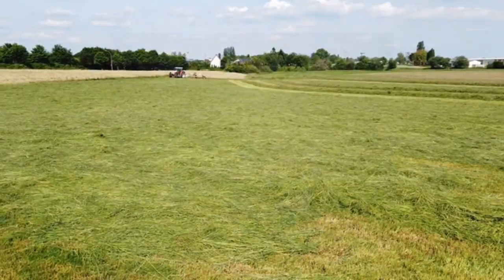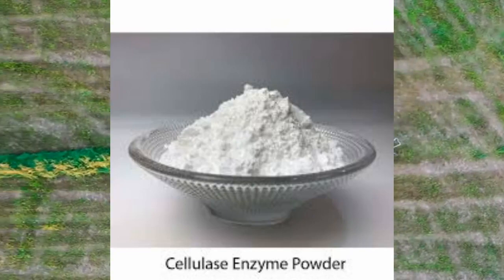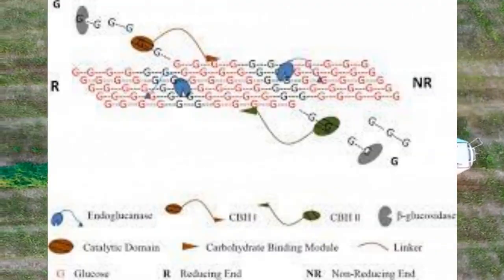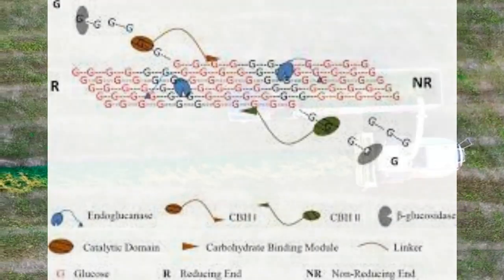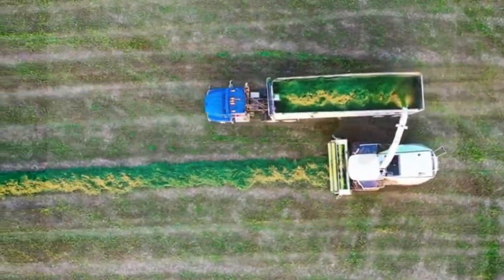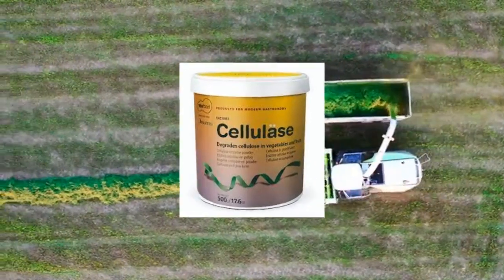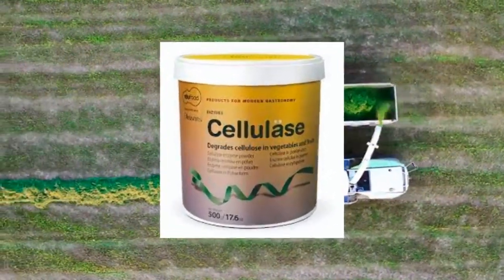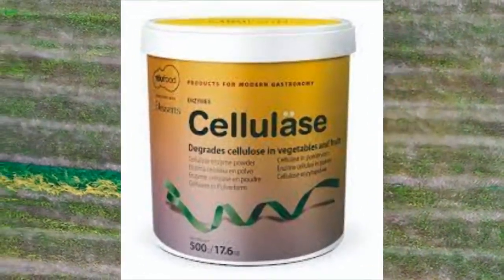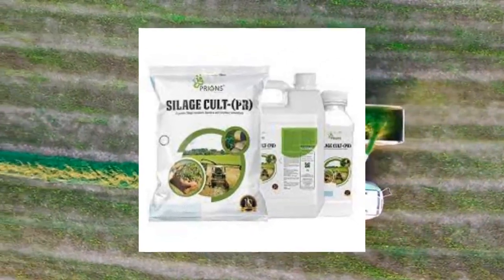Let's look at the enzymes. We have cellulase and hemicellulase. These enzymes, when added to silage, break down plant cell walls, releasing sugars that bacteria can ferment into lactic acid, thus improving the efficiency of the fermentation process. We also have amylase, which breaks down starches into fermentable sugars, aiding in the fermentation process and increasing the energy content of the silage.